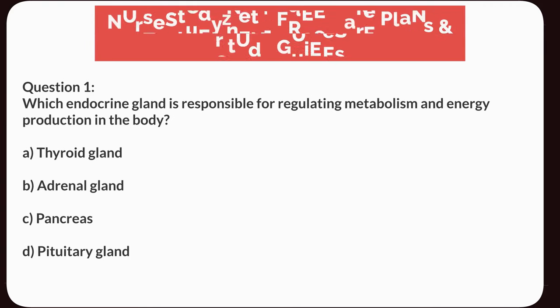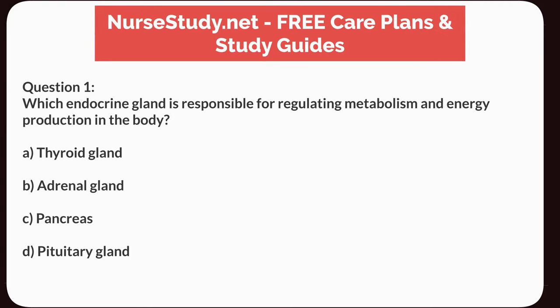Question 1. Which endocrine gland is responsible for regulating metabolism and energy production in the body? A. Thyroid gland. B. Adrenal gland. C. Pancreas. D. Pituitary gland.